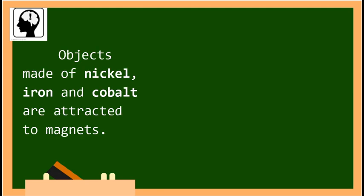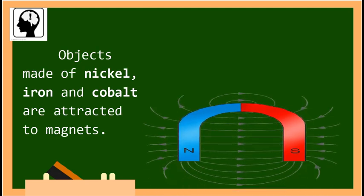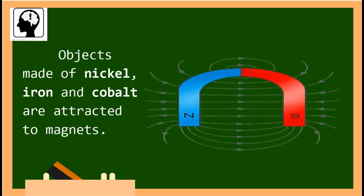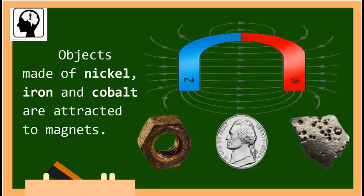Magnets do not attract all metals. Objects made of nickel, iron, and cobalt are attracted to magnets.